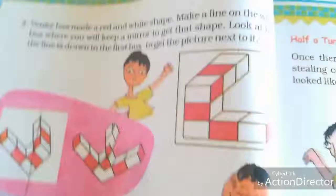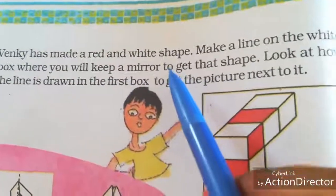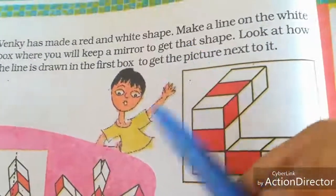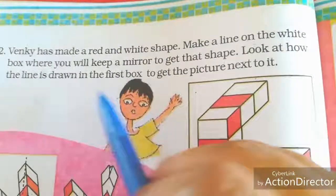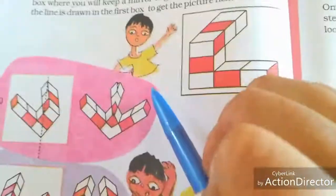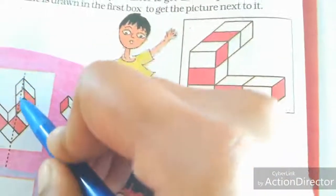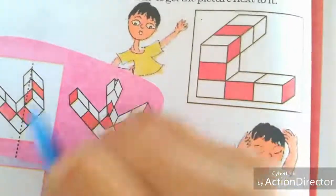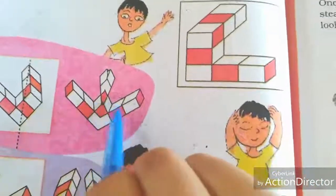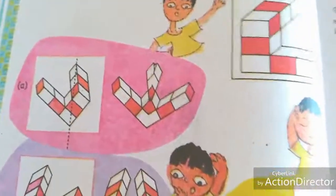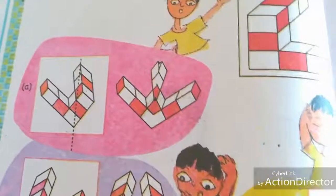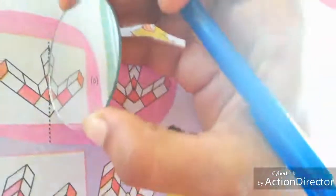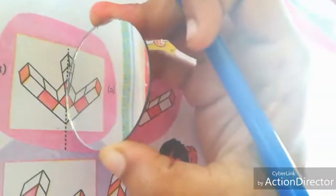Turn to the next page. Wenki has made a red and white shape. Make a line on your whiteboard — where will you keep a mirror to get that shape? Look at how the line is drawn on the first board to get the picture next to it. He draws one dotted line on the first board. We can get the mirror image like this. If you have any confusion, take a rectangular shaped mirror and keep it on the dotted line. This image only we can see.